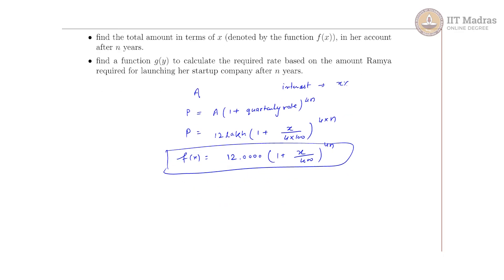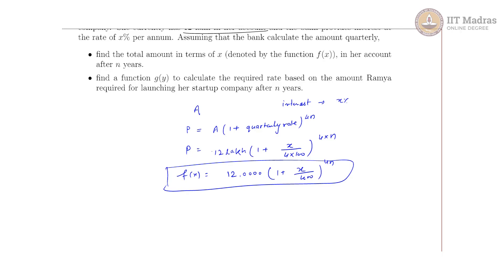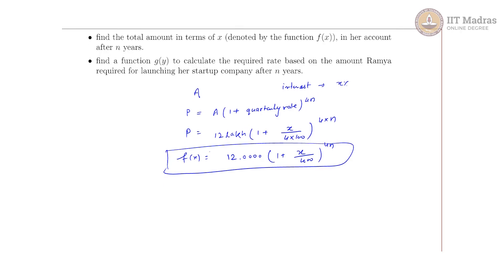What is the second question? Find a function g(y) to calculate the required rate based on the amount Ramya required for launching her startup after n years. This is a thinking based question. Earlier we were given rate and we were finding the total sum. Now the sum is given, we need to find the rate, means we need to find x. When we need to find x, we actually talk about the inverse function.